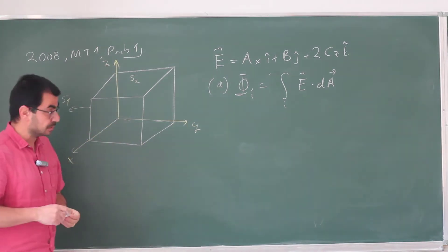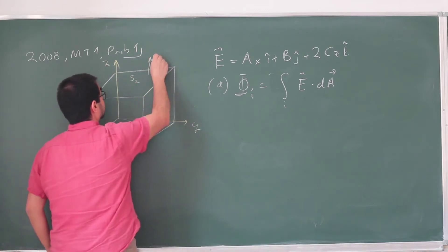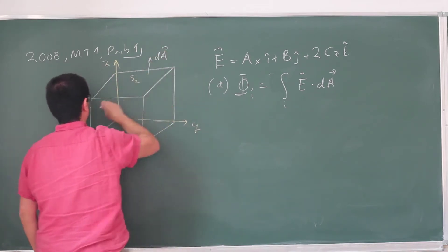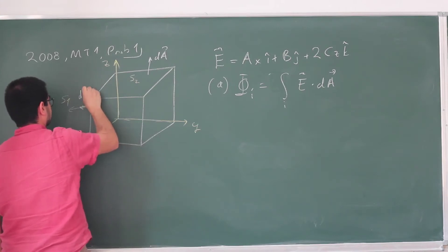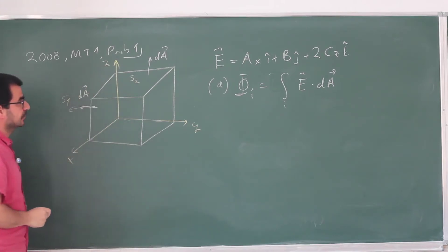So the surface element is going to look like this. For face two it's going to look like this. For face one, and so on and so forth. And then we need to calculate this for each of the faces.